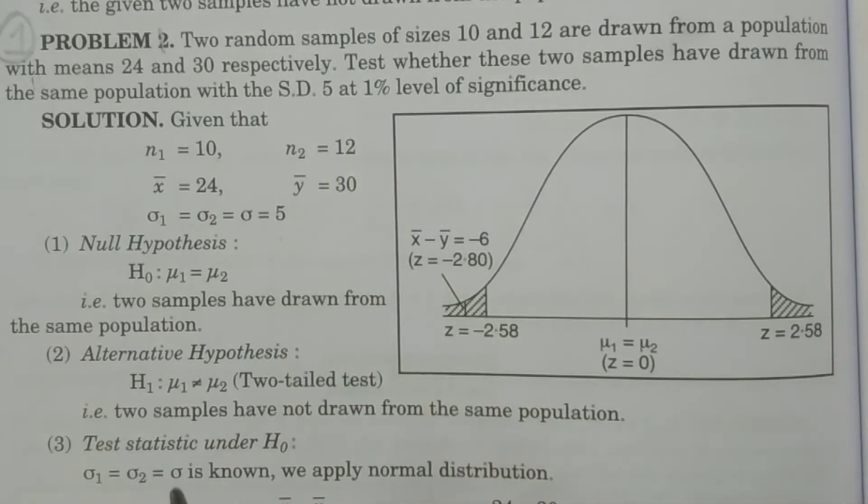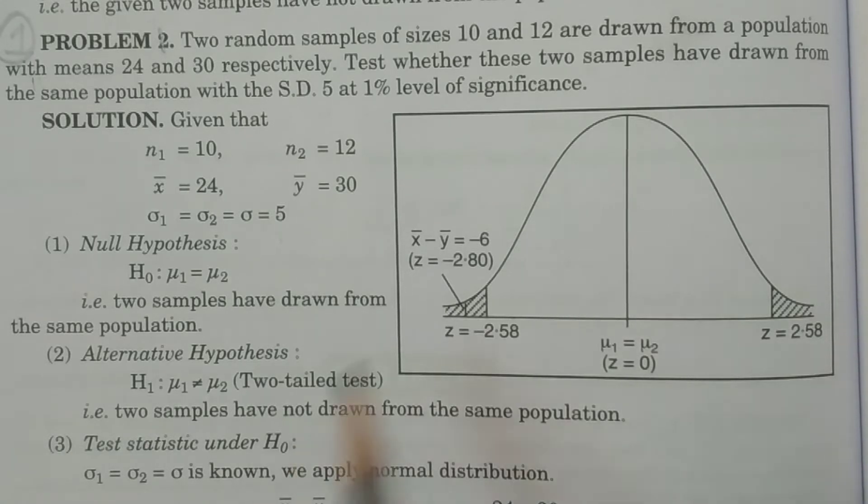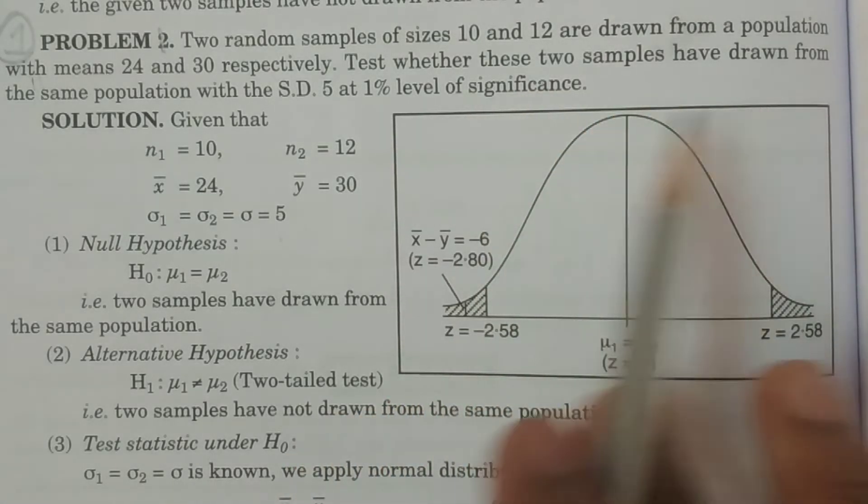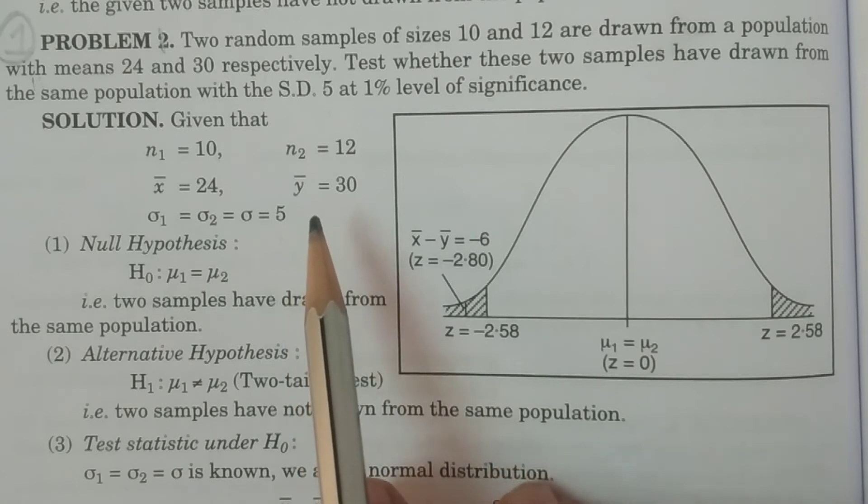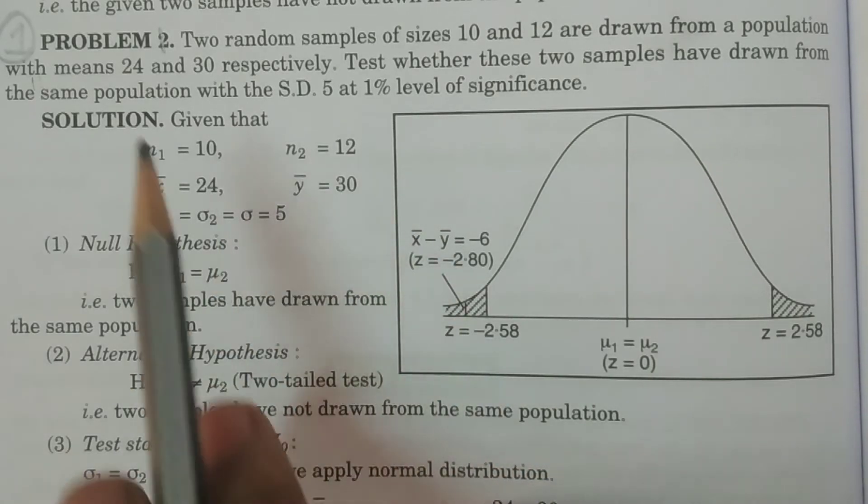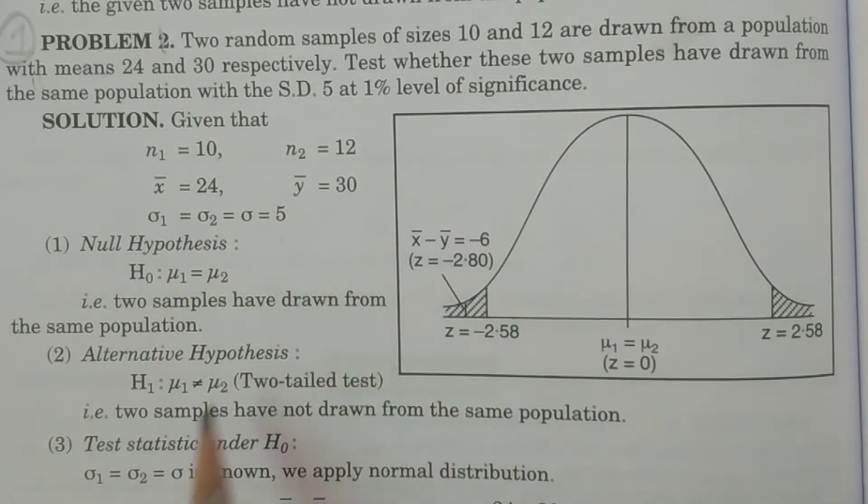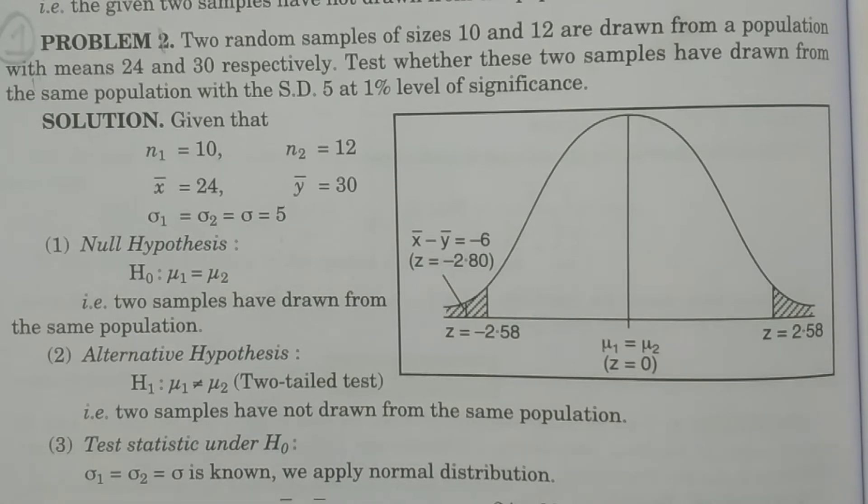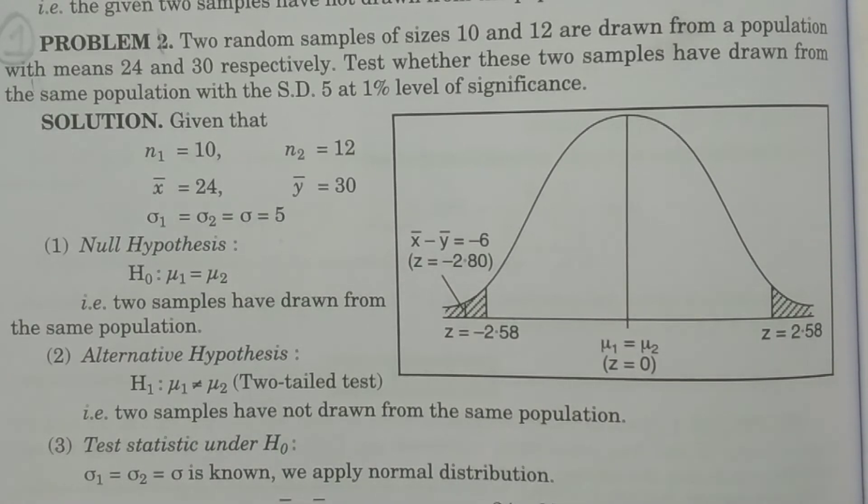Therefore, because the sample sizes are less than 30, less than or equal to 30, 10 and 12, which are small samples, it is a small sample test procedure. And then secondly, now the test is whether regarding the means or proportions or standard deviations, etc., which you have to check. So, test whether these two samples are drawn from the same population. That is the question for which means are given x bar, y bar. Therefore, it is a test of means.